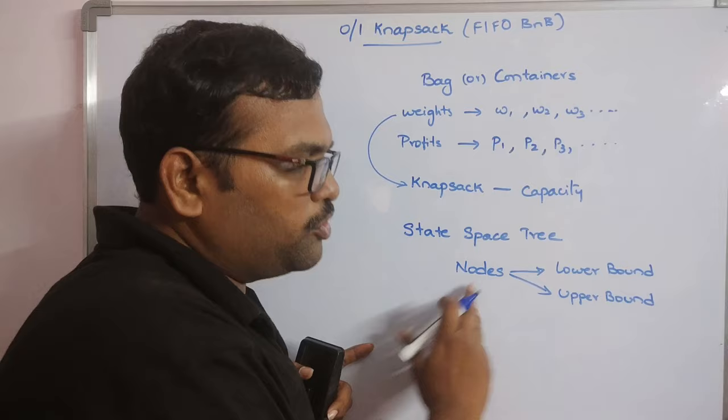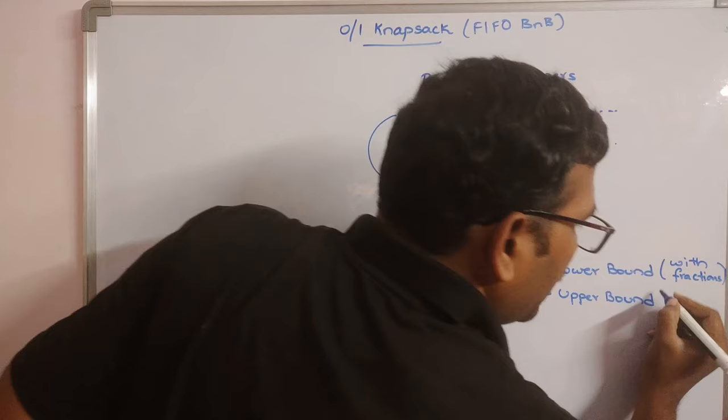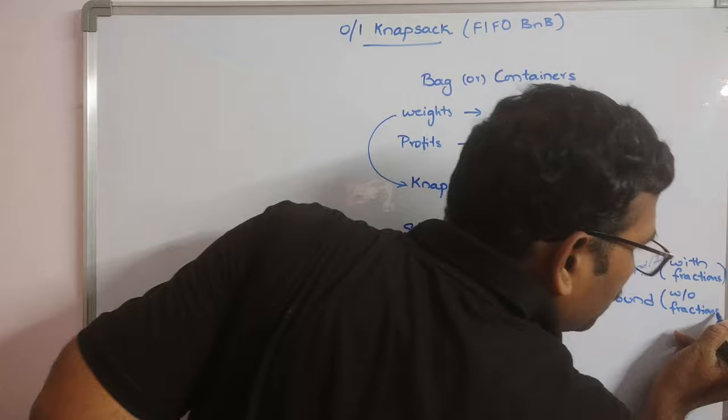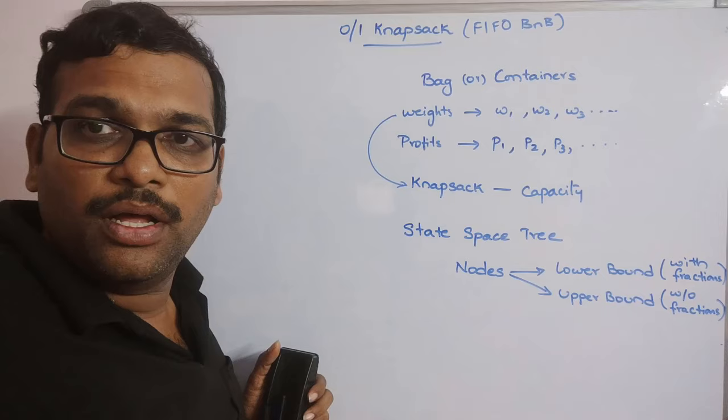The lower bound values will be calculated with fractions allowed, and the upper bound will be calculated without fractions. For every node we have to calculate both of these values.